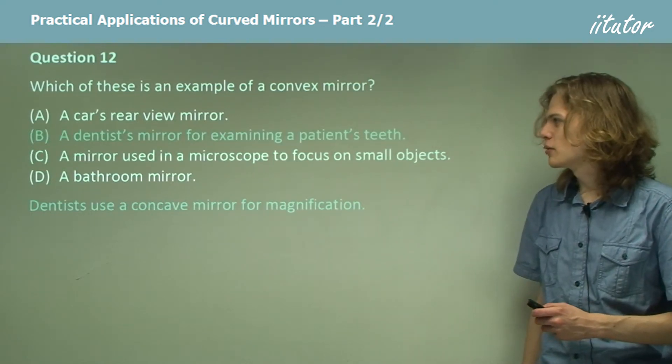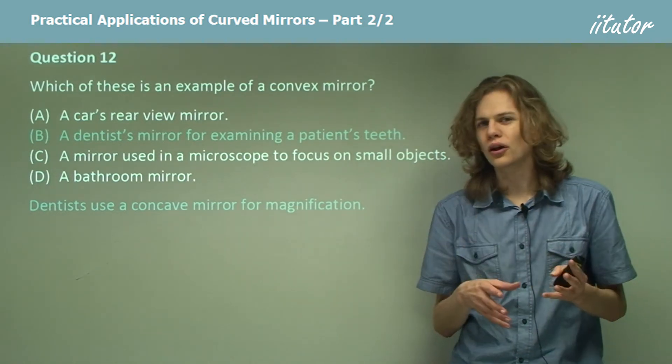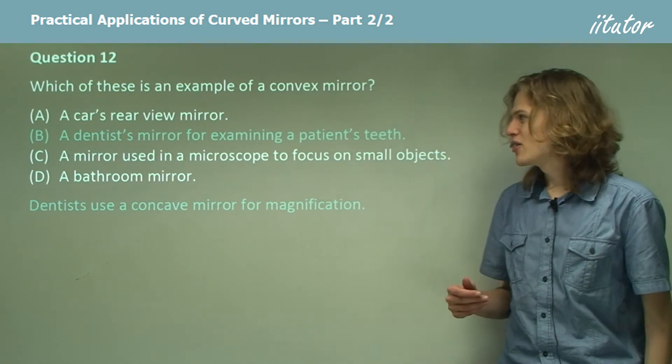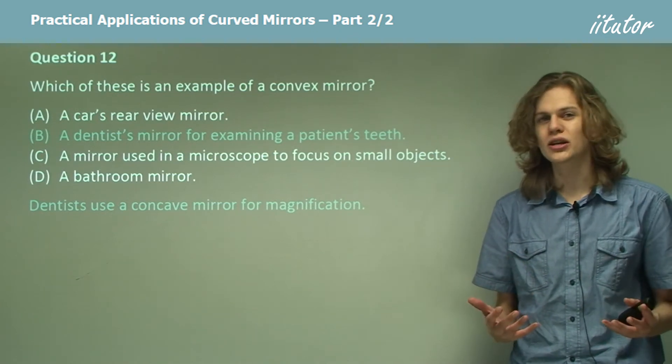B, a dentist's mirror for examining a patient's teeth. Once again, the dentist doesn't want the teeth to look smaller, so they won't use a convex mirror. Instead, they'll use a concave mirror, because a concave mirror can provide a magnification of the image.